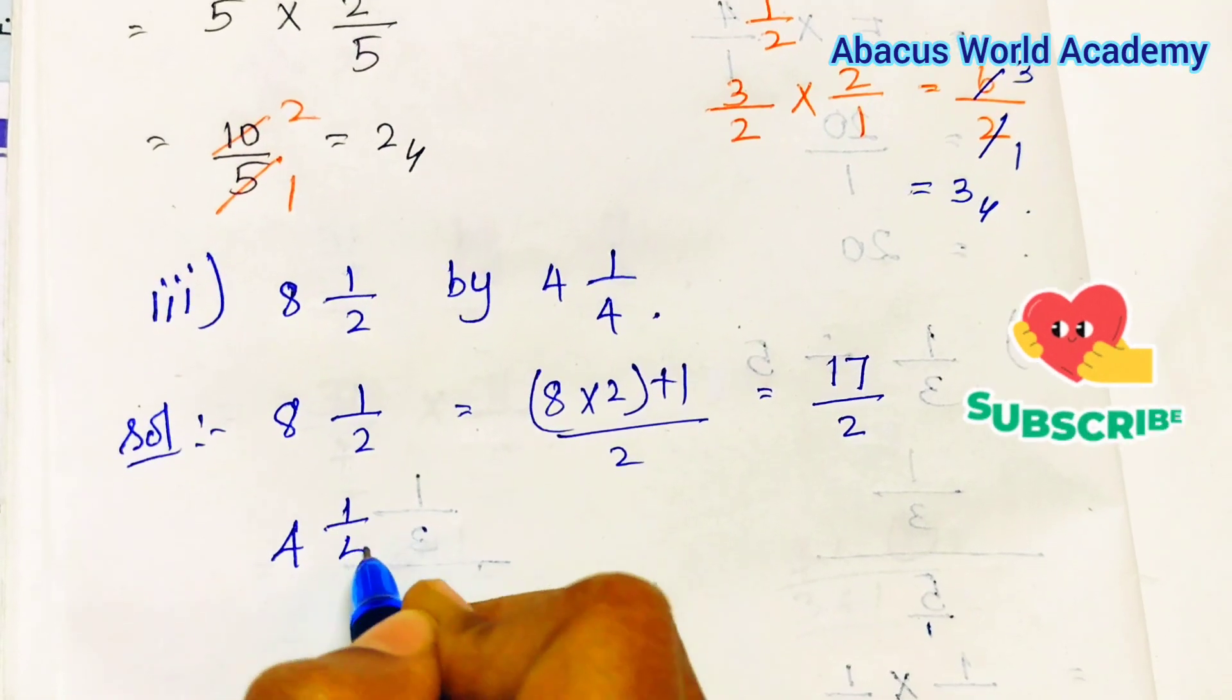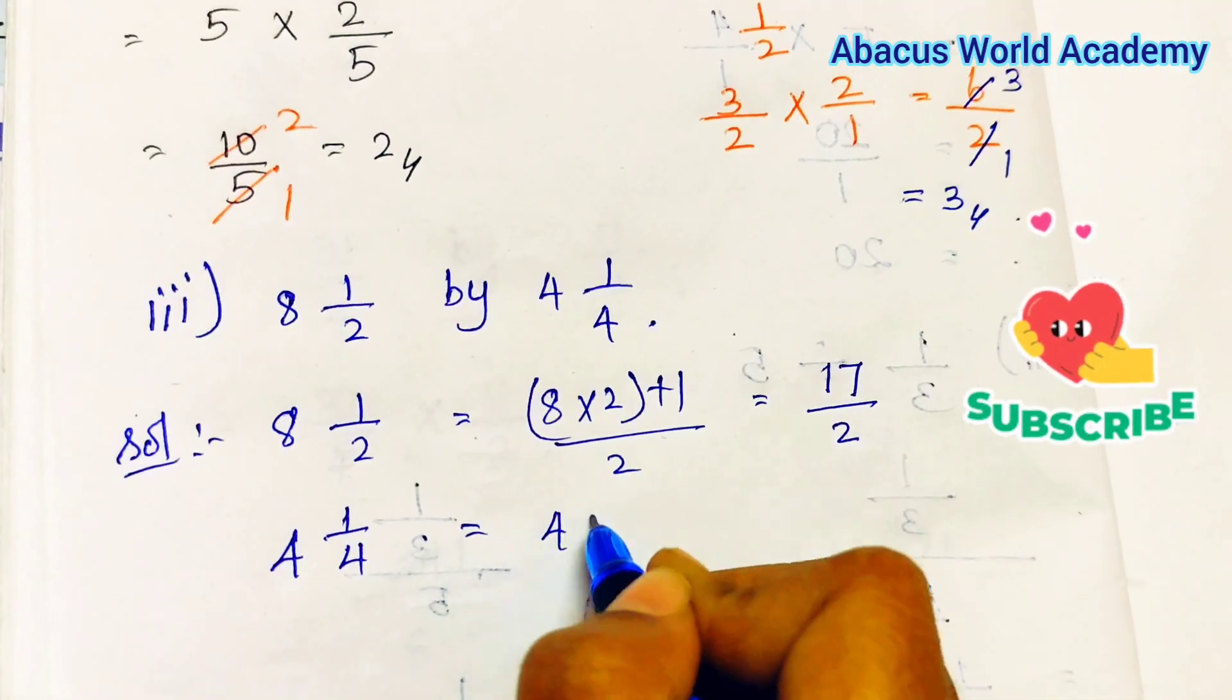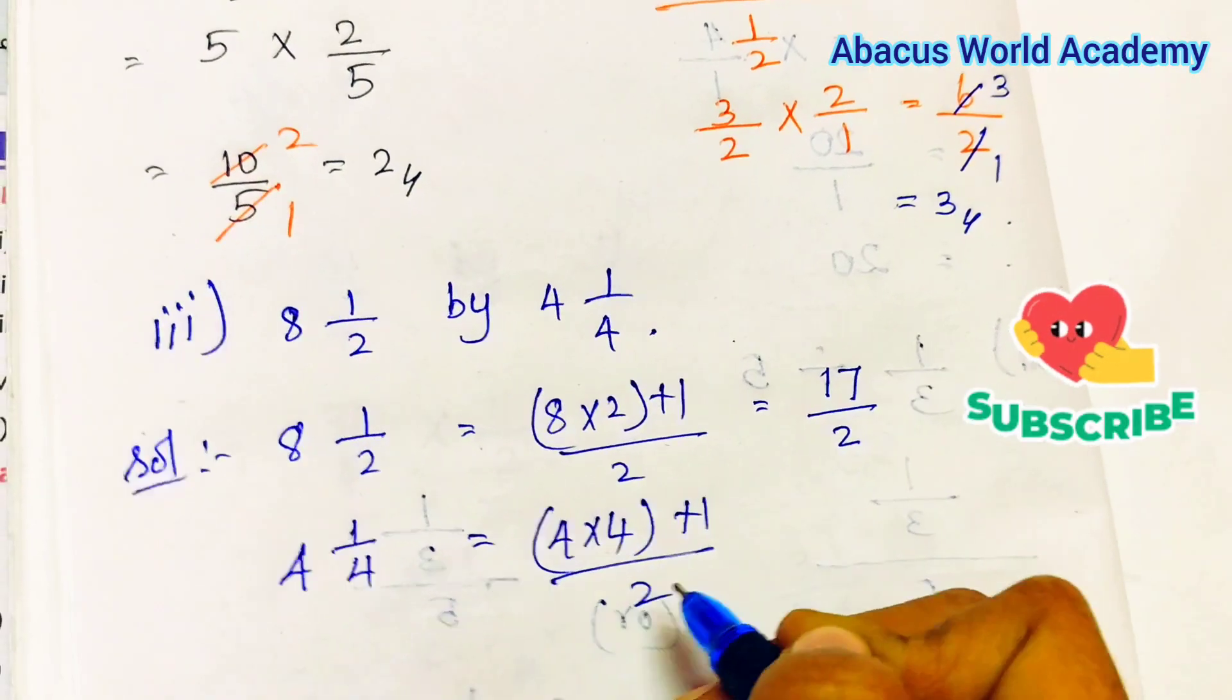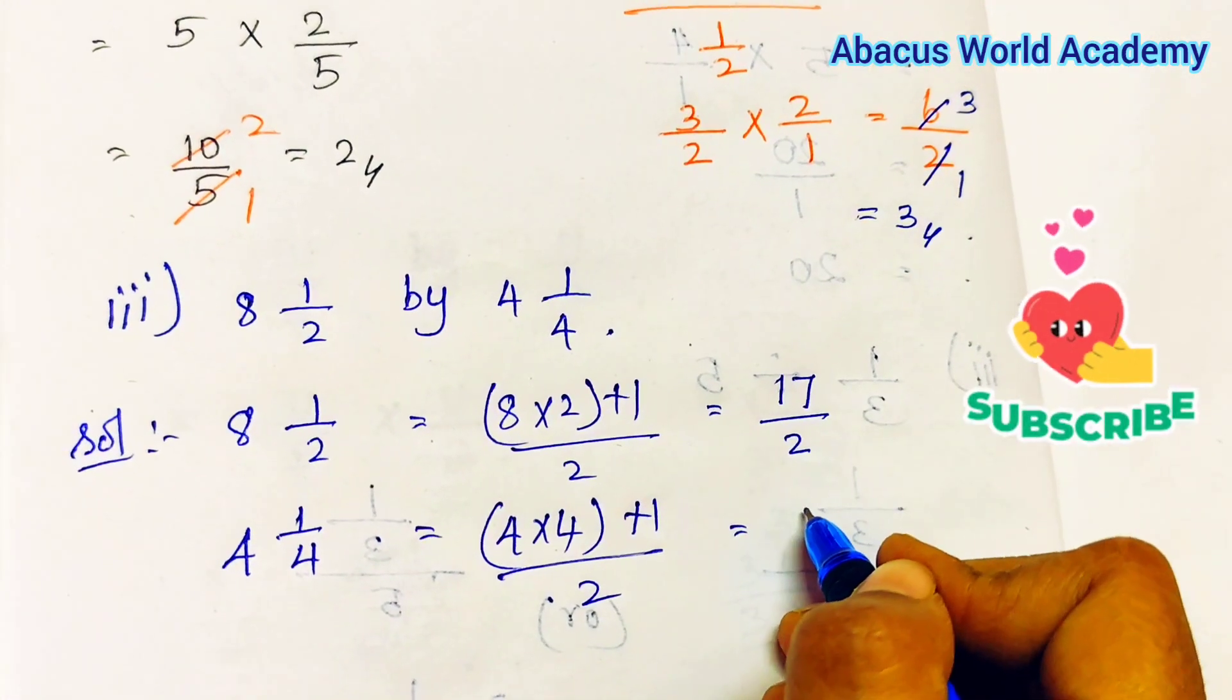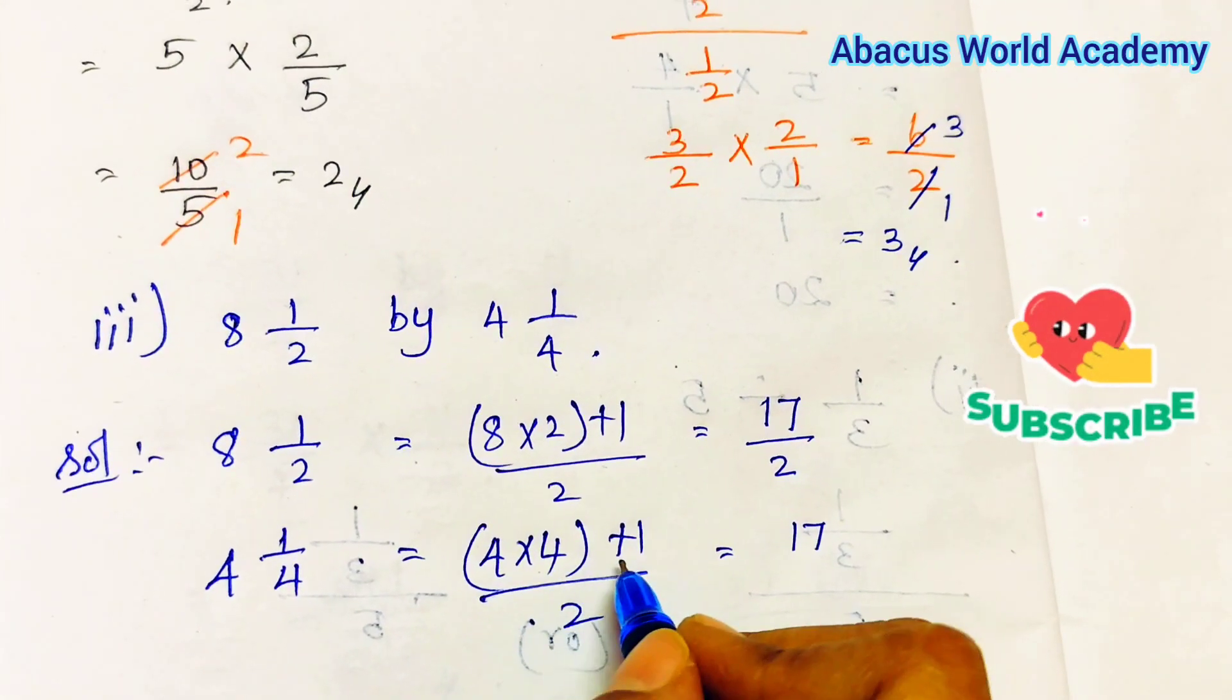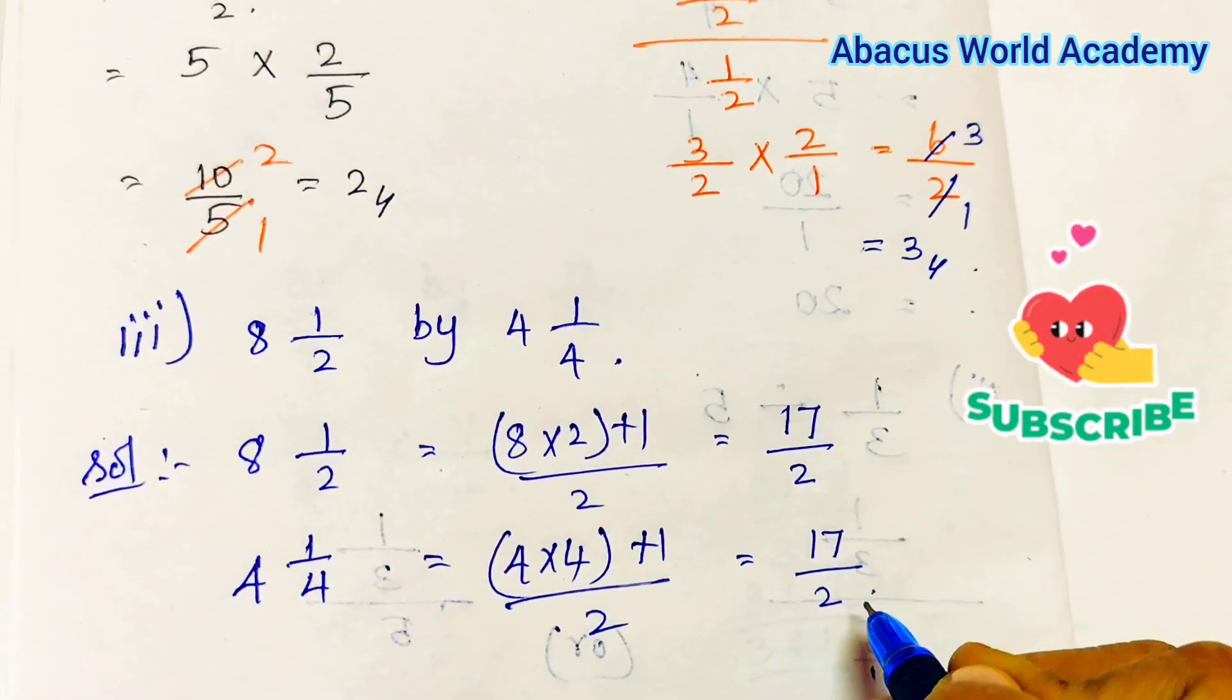Next: 4 and 1/4 is equal to 4 into 4 plus 1 by 2, is equal to 4, 4 is equal to 16 plus 1, 17 by 2.